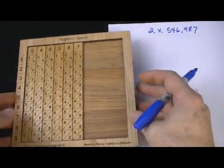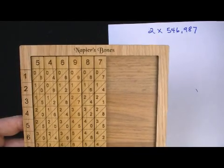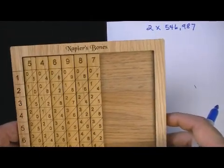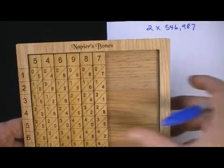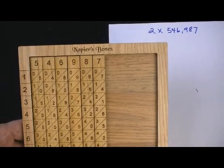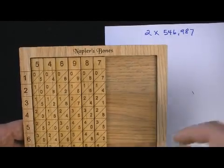Okay. Now here's the basic instruction on how to use the rods. And as I said, there are some very good websites that will give you lots of more detailed information. But I wanted to give you an idea here. Let's suppose I have this multiplication I want to do. And it's 2 times 546,987.